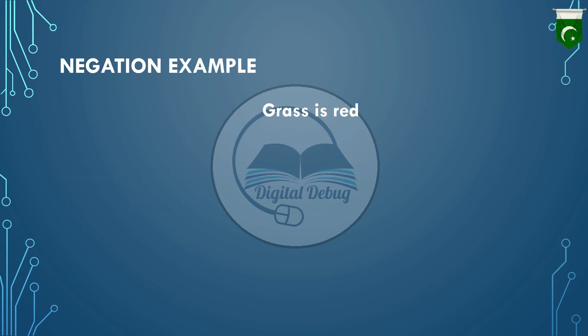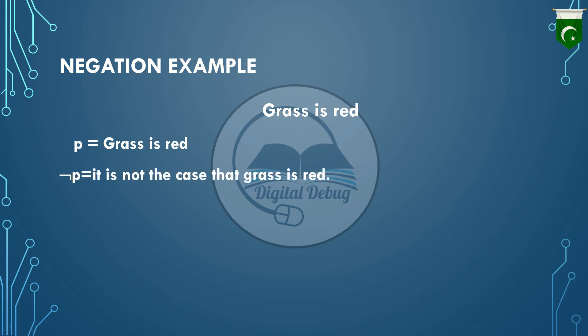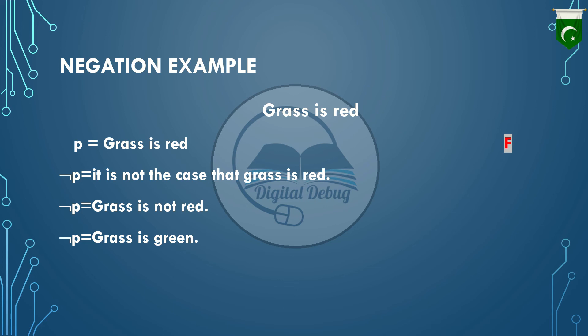Let's take another example: 'Grass is red.' Our first step is representing this proposition with a propositional variable P. Next, the negation of P will be: 'It is not the case that grass is red,' or 'Grass is not red,' or 'Grass is green.' We know that 'Grass is red' is a false statement, so after negation the truth value will be true.